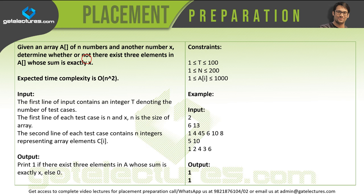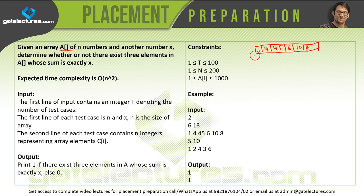First let us understand the problem. It says: given an array A of n numbers. Assuming that we have an array with the numbers 1, 4, 45, 6, 10, and 8 — this is array A. And another number x, which can be anything. Assuming that this number x is 13.